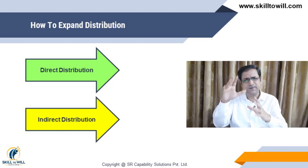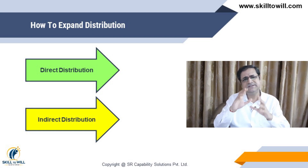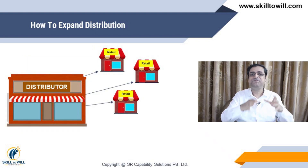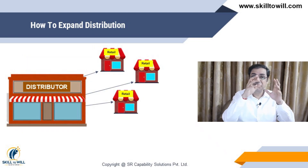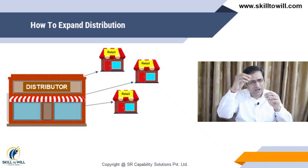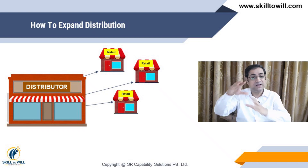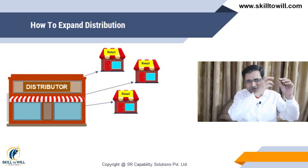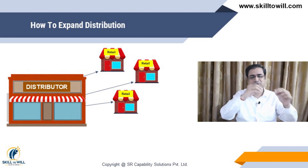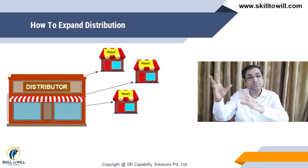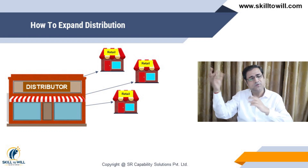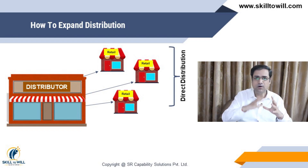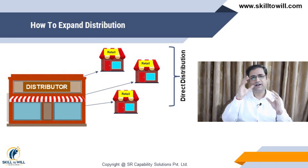Let me explain to you what these two are with some illustration. What is distribution? There is one distributor. The flow of goods from the company to the distributor, to the retailer, and then to the consumer — this is direct distribution. Here, the company will directly supply through the distributor.